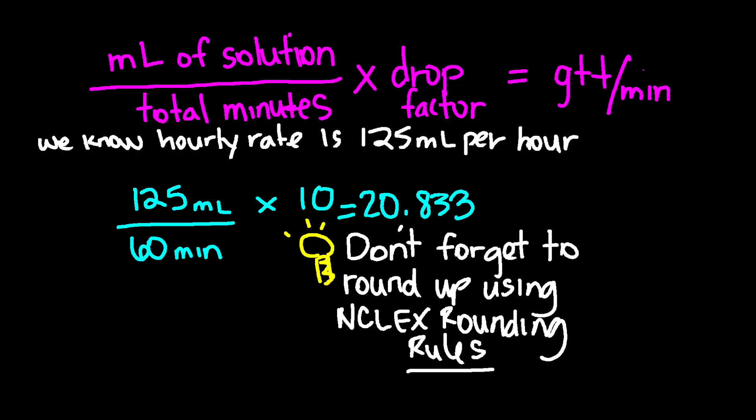Now that you have the rate of 125 mLs per hour, you'll want to know the drop rate. The drop factor can be 10, 15, or 60 drops per mL. The formula is: mLs of solution divided by total minutes, multiplied by the drop factor, equals drops per minute. With 125 mLs per hour and a drip factor of 10 drops per mL, divided by 60 minutes, the answer is approximately 20.83 drops per minute.